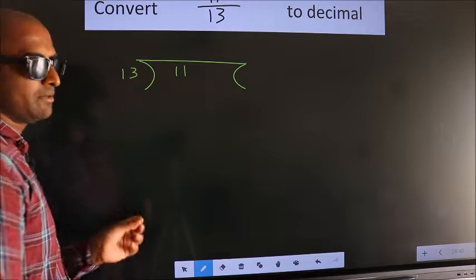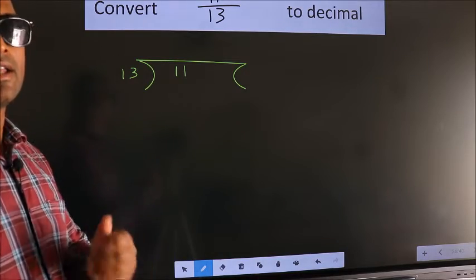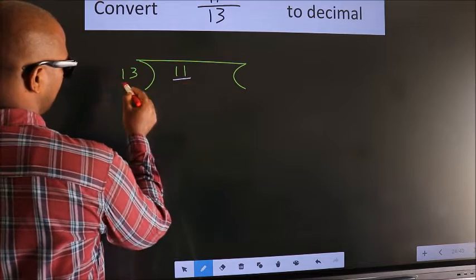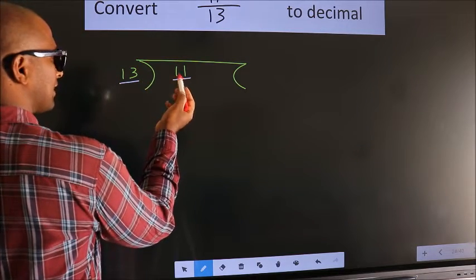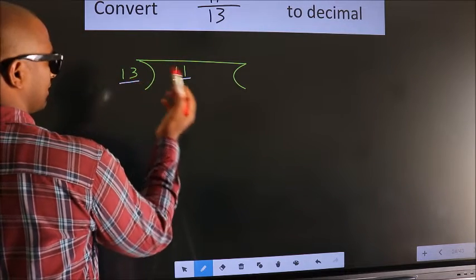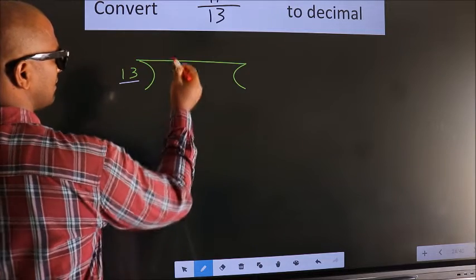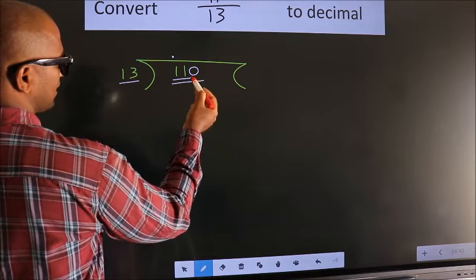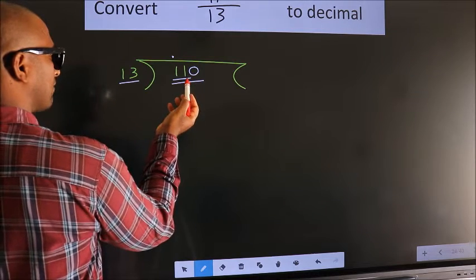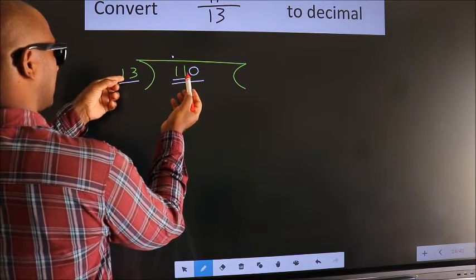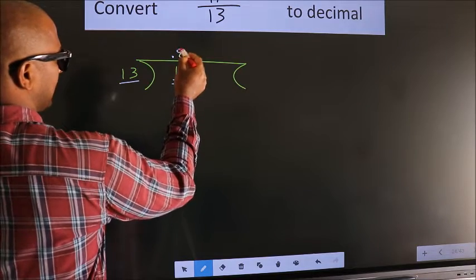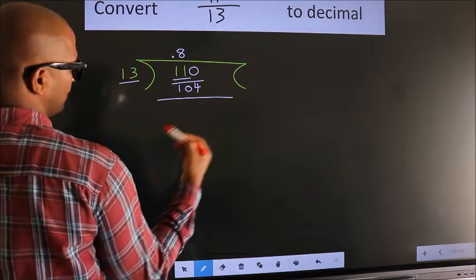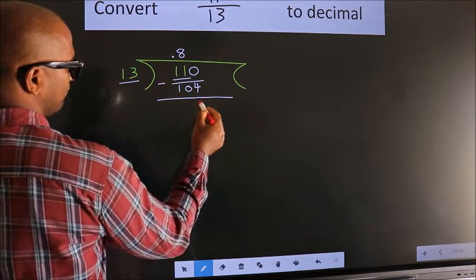This is step 1. Here we have 11 and here 13. 11 is smaller than 13, so what we should do is put a dot here and take 0 here — so 110. A number close to 110 in the 13 table is 13 eights, 104. Now we subtract and we get 6.